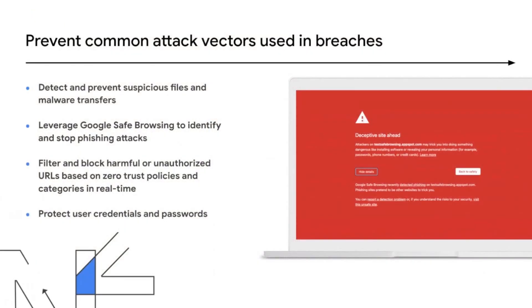The next step in this holistic approach for unmanaged devices is how we handle threat protection. This is a layered problem: first, control access; second, apply data protections; third, reduce remaining risk. That's where threat protections for malware and phishing come into play — all leveraging Google's Safe Browsing, which is already deployed across 5 billion devices. We're now bringing that power into BeyondCorp Essentials to provide a comprehensive solution of access and protections for unmanaged devices.